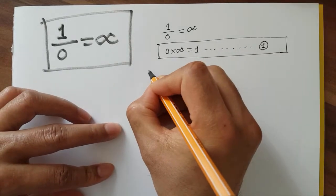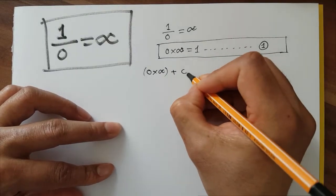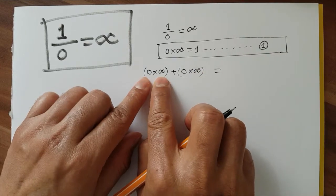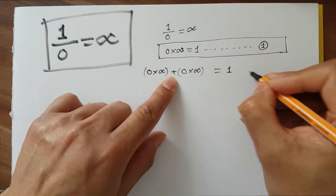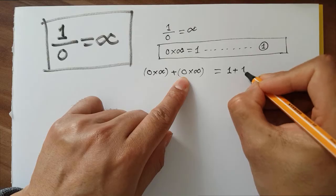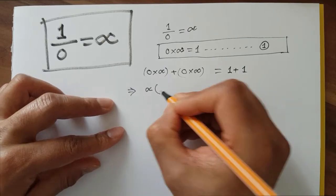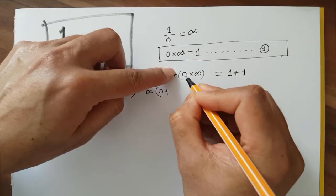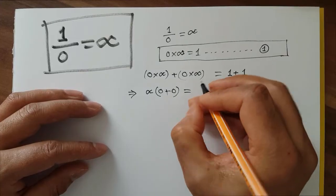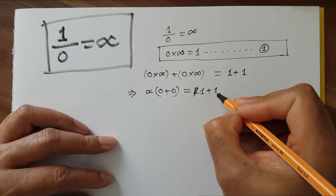Based on this equation, I can write: 0 times infinity plus 0 times infinity. Since 0 times infinity equals 1, I can write 1 here, and again 1 here. Then from this equation I can take infinity as a common factor — the remaining is 0 plus 0. The right-hand side becomes 1 plus 1, which equals 2, or I can keep it as 1 plus 1.